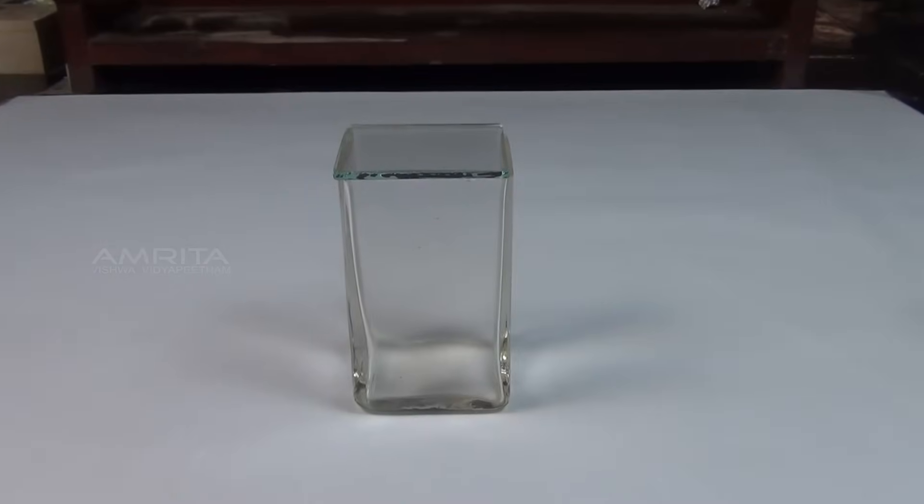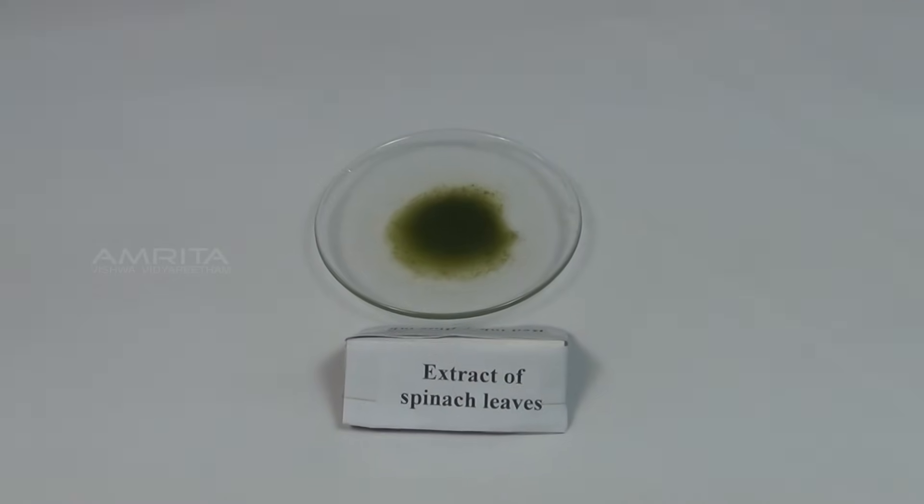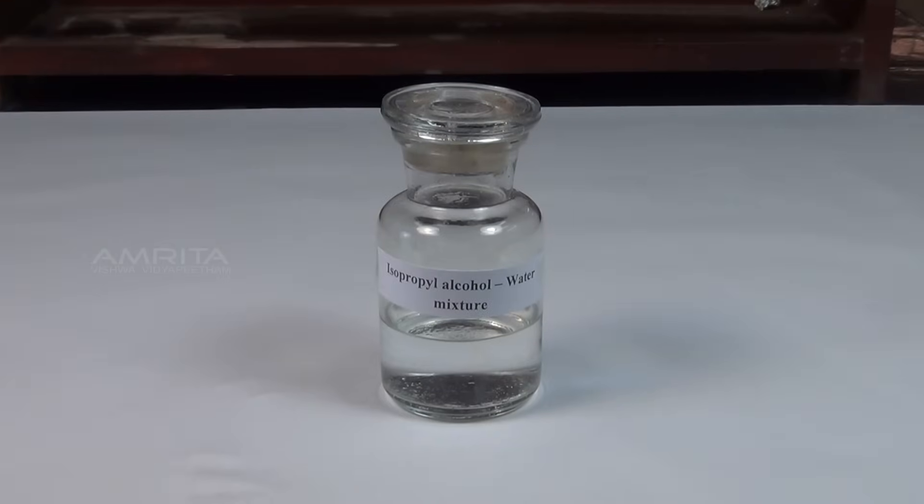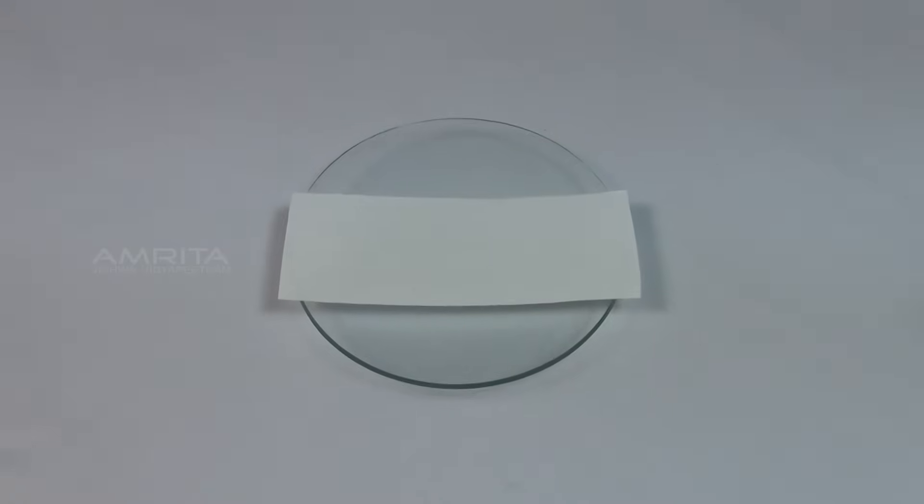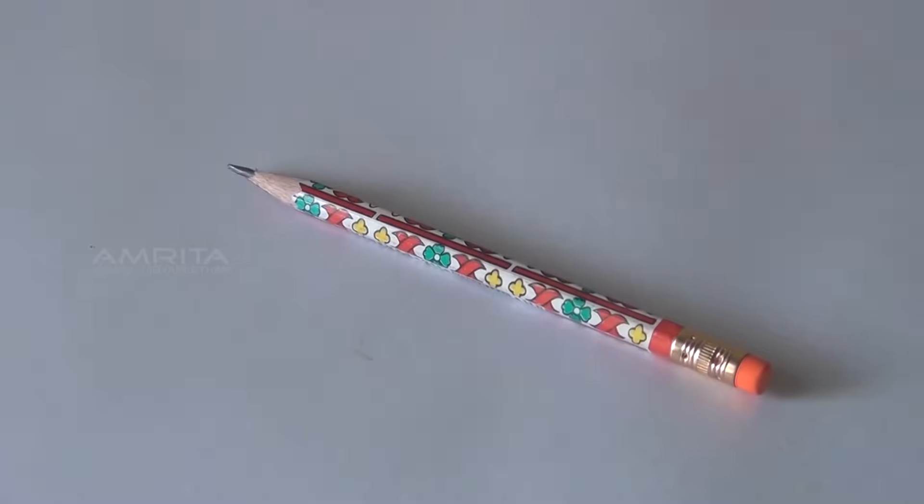Materials required: Chromatographic chamber with lid, extract of spinach leaves, isopropyl alcohol water mixture, Wattmann filter paper strip, fine capillary tube, thread, scale and a pencil.